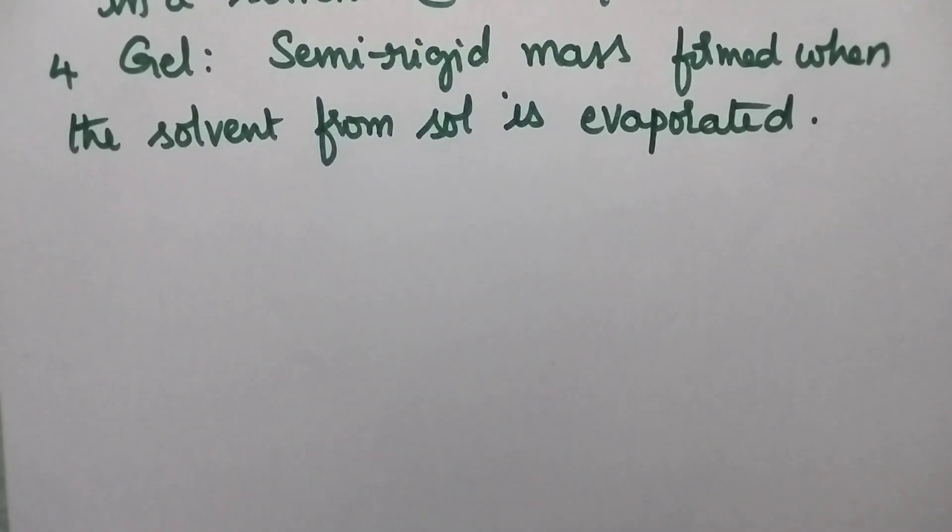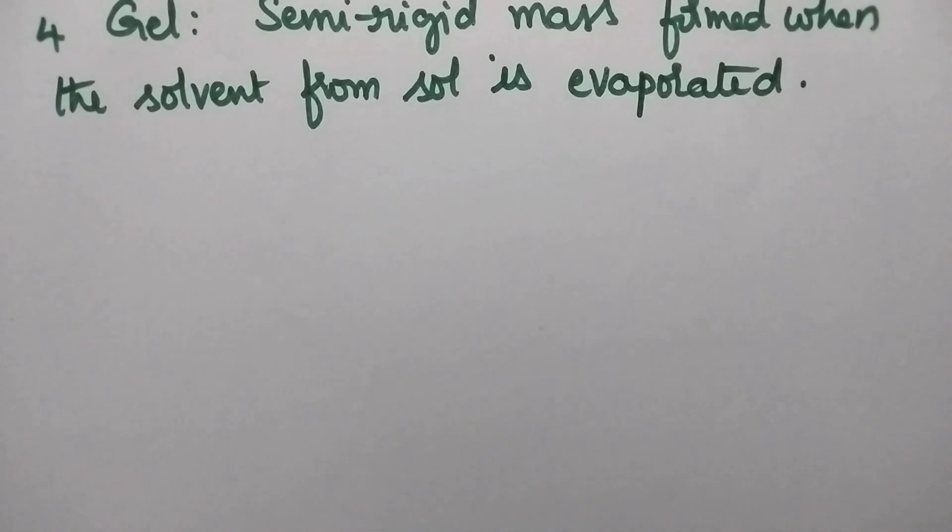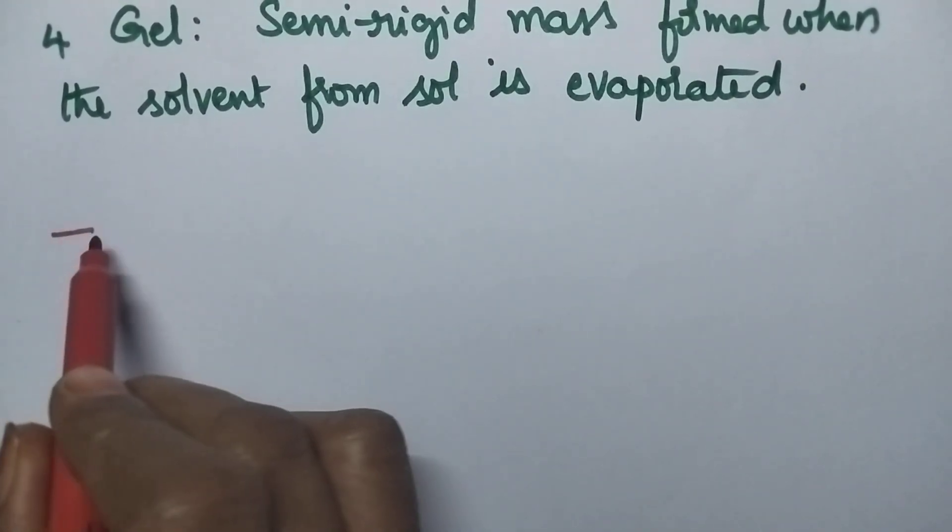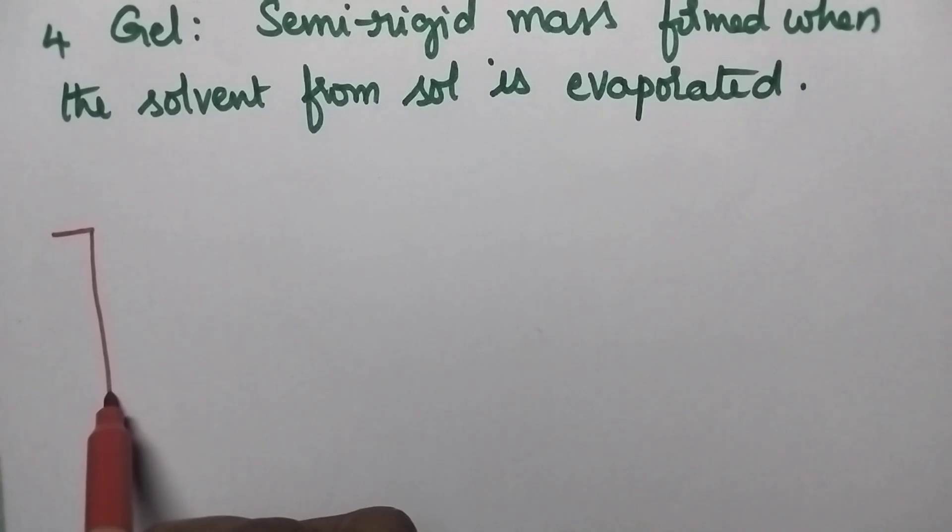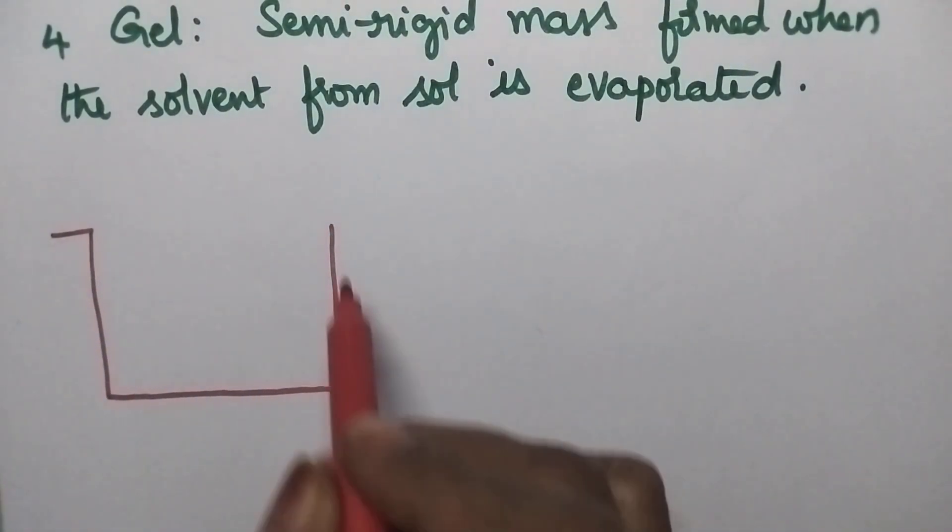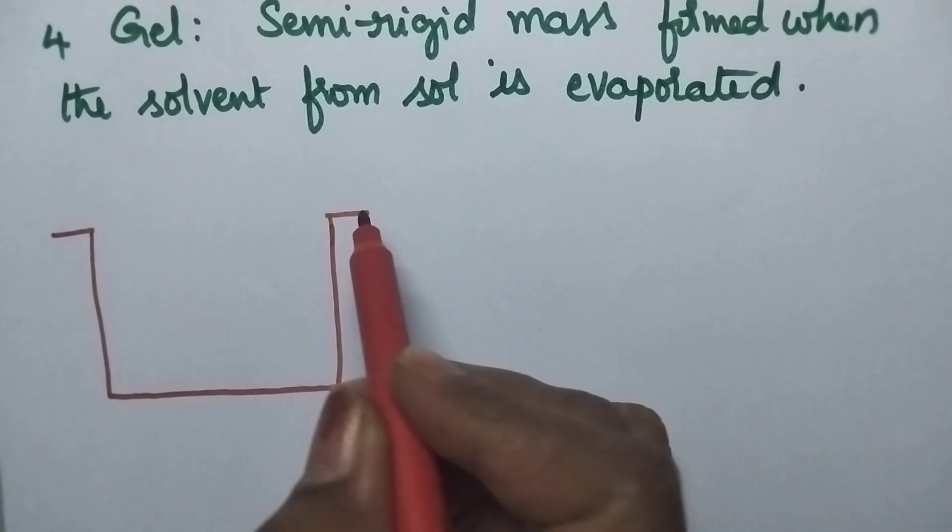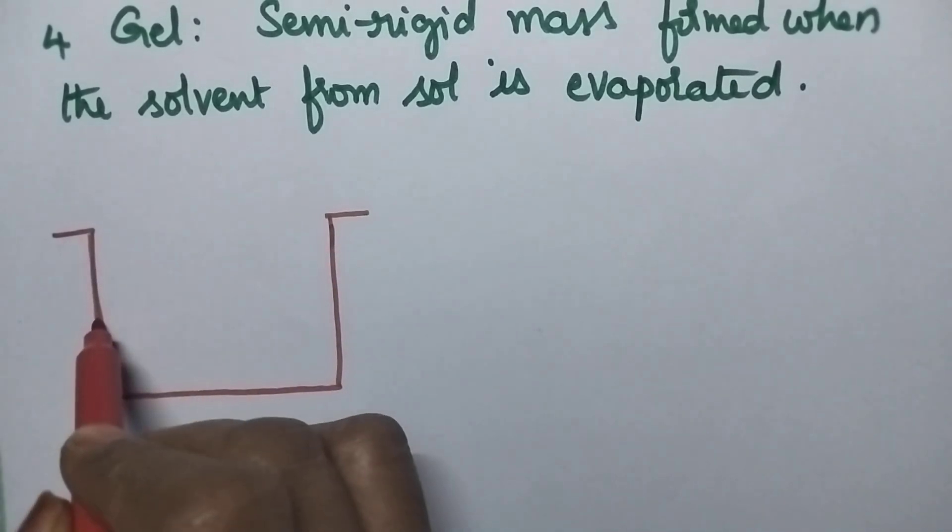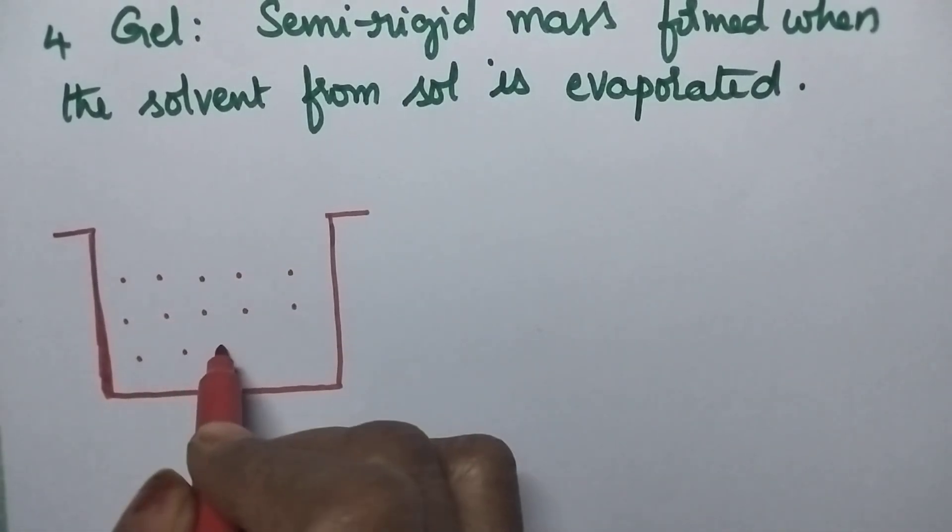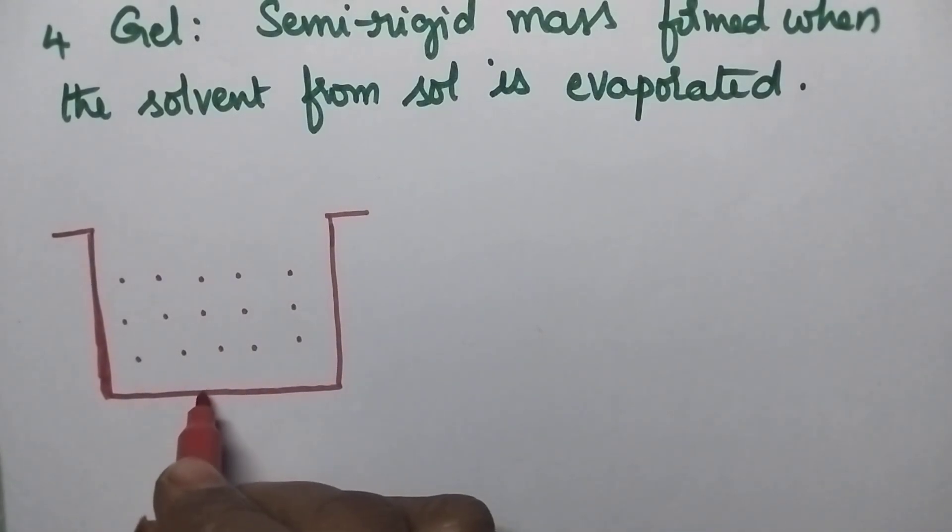Let us see how a Sol will be converted into a Gel. Initially let us consider a solution. So in general Sol means it may be a colloidal solution or molecular suspension. So it consists of very finely divided particles.